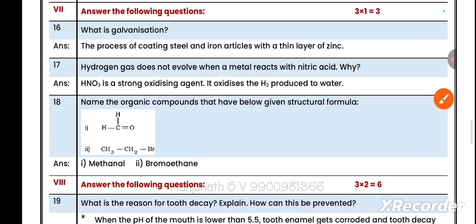Question main number 7: Answer the following questions, each carrying one mark. What is galvanization? The process of coating steel or iron articles with a thin layer of zinc is called galvanization. Question number 17: Hydrogen gas does not evolve when a metal reacts with nitric acid. Why? Nitric acid is a strong oxidizing agent. It oxidizes the hydrogen produced to water.